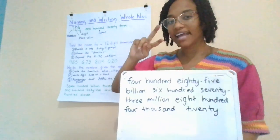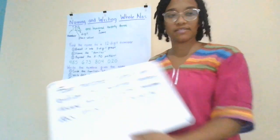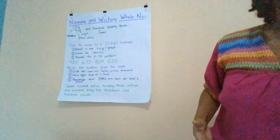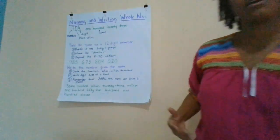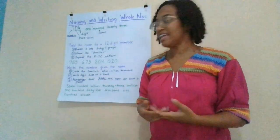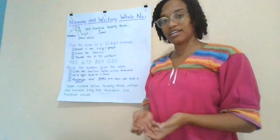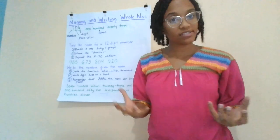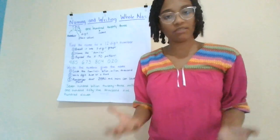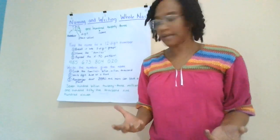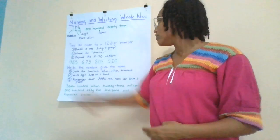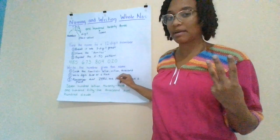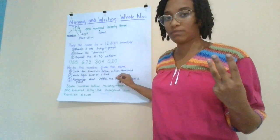Now let's try it again, but backwards. Let's say we have the name, but we need to find the digits that can represent it. We want to make it shorter and use symbols and math to communicate an idea. We're going to write the number given the name, and we've got three steps for this one as well.